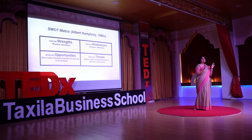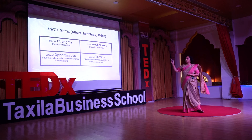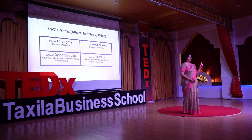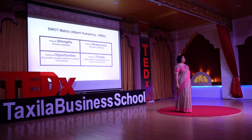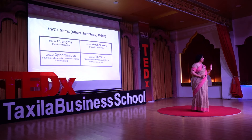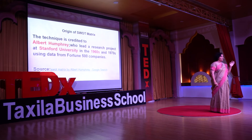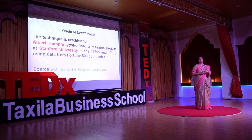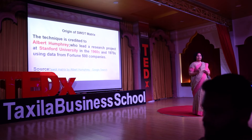This is the SWOT matrix given by Albert Humphrey, and he gave it to us in 1960. This matrix talks about four things: Strengths, Weaknesses, Opportunities, and Threats. Strengths and weaknesses are the internal parts; opportunities and threats are external. In 1960, at Stanford University, Humphrey collected data from Fortune 500 companies and developed this concept.